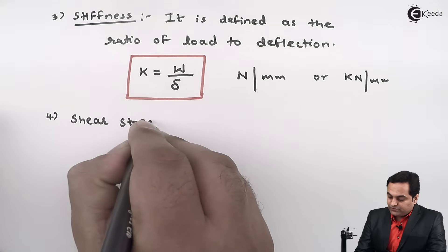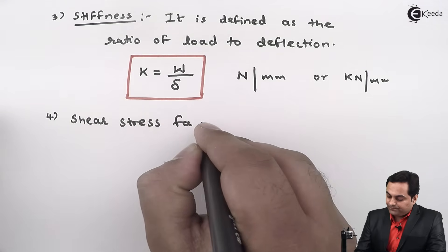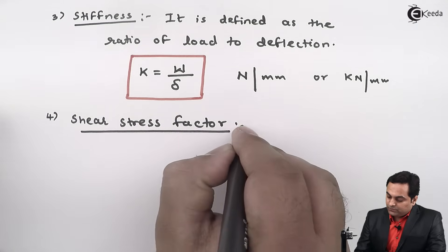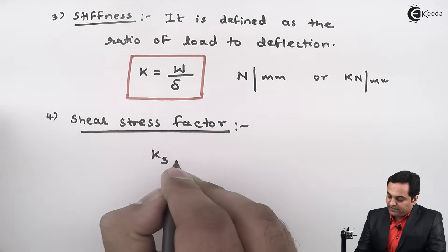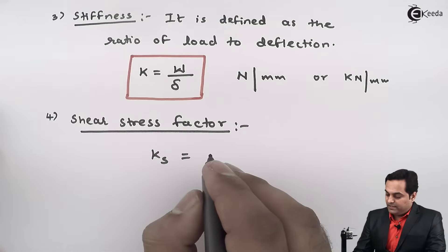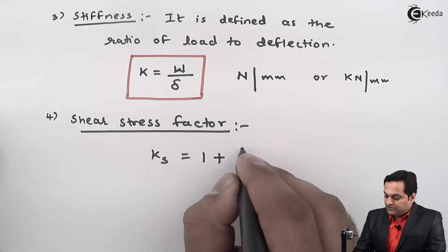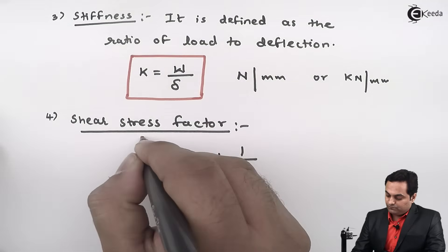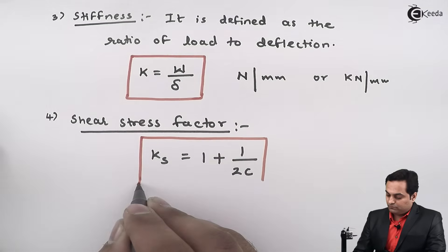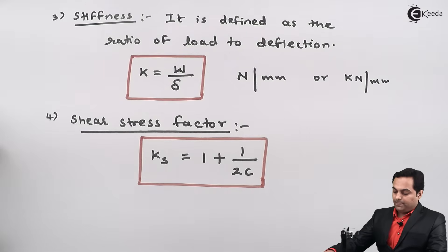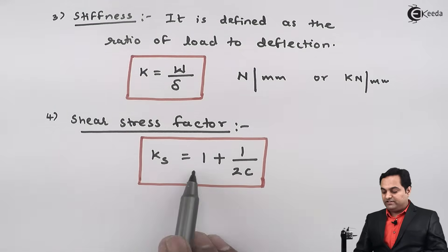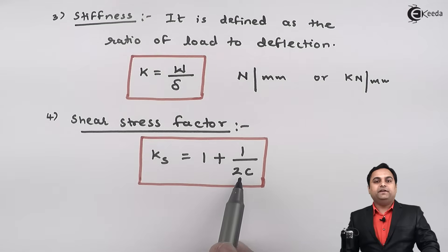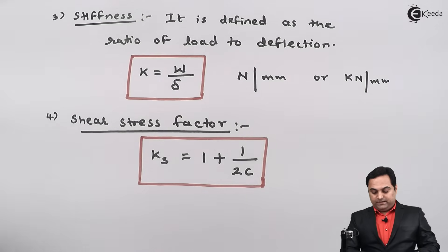Next after stiffness is the shear stress factor. Shear stress factor is denoted by K subscript S, and it is equal to 1 plus 1 upon 2C. In the shear stress factor, we get the relation between shear stress factor and spring index C.